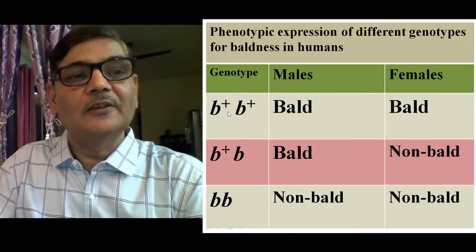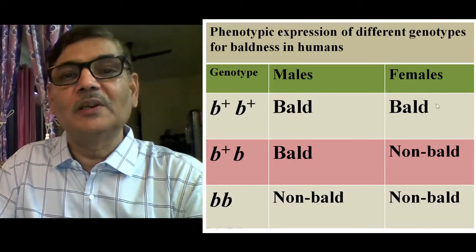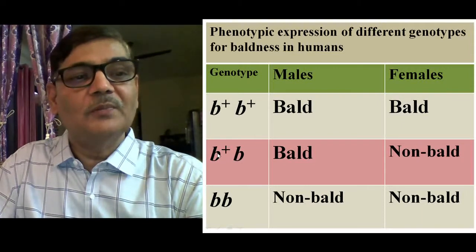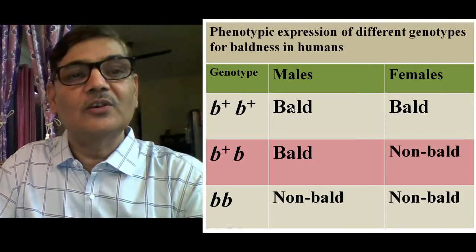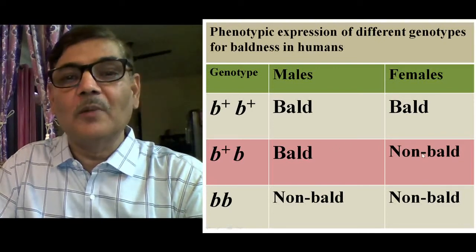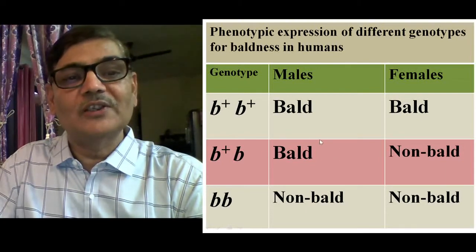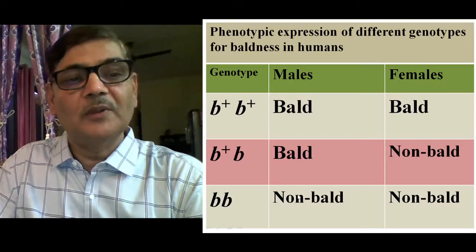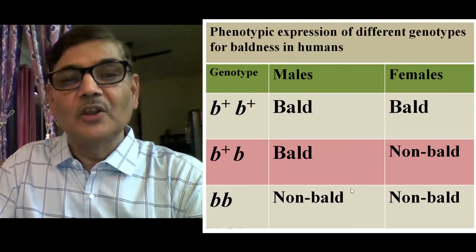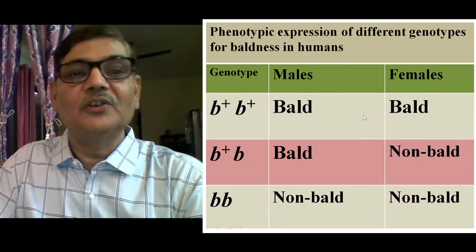We observe that the same genotype causes baldness in both sexes, but the intensity of baldness is less in human females. If the genotype is heterozygous B-plus, B, then males are bald — just like the homozygous dominant condition — but females are non-bald. And with genotype small b, small b, both males and females are non-bald. This is the sex-influenced trait: the sex of the individual influences the expression of the feature.